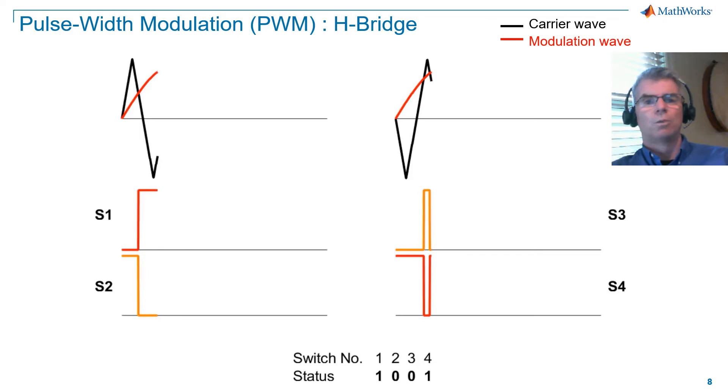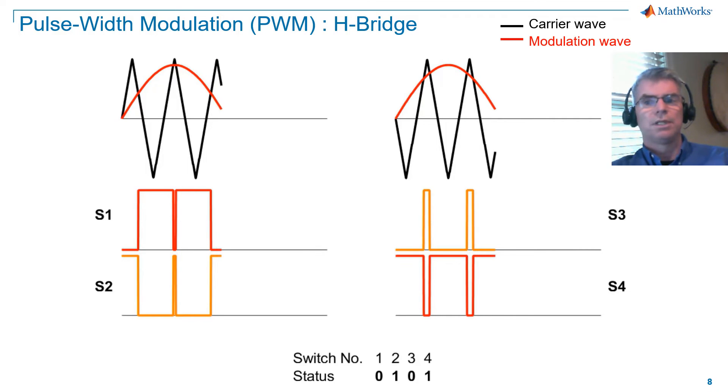You can see that for arm 1, which has switches 1 and 2, that the S2 PWM signal is the logical knot of the S1 PWM signal.